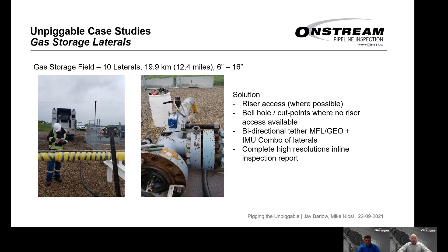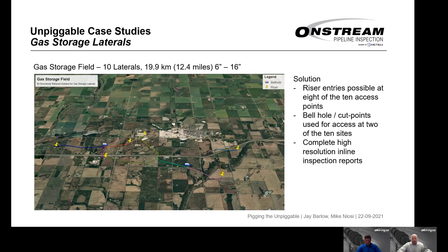One of the above-ground risers provides convenient access — the truck parks nearby, a flange is broken open, and we slide the tool into the riser off a tray. Our solution uses riser access wherever possible and bellhole access with pipe cutting where it's not. We use our bi-directional high-res tethered MFL, geometry, and IMU equipment. Riser entries were possible at 8 out of 10 laterals, while bellholes and cut points were needed for 2 of the 10 segments. Complete high-res inline inspection reports were provided for each segment.